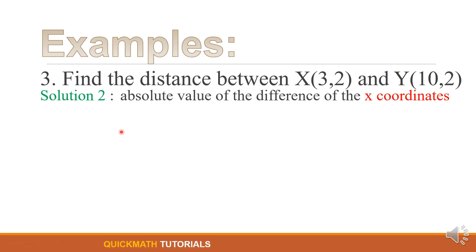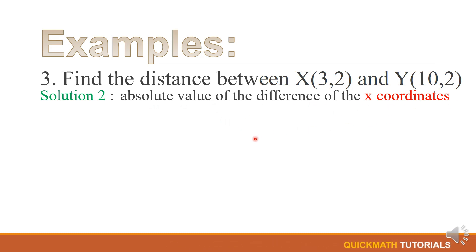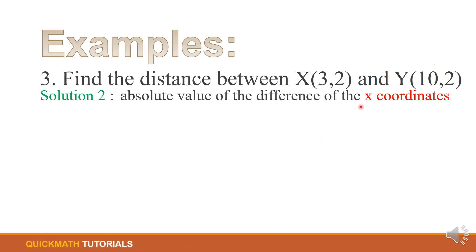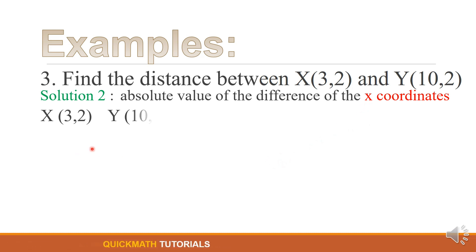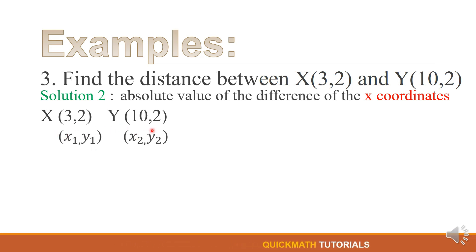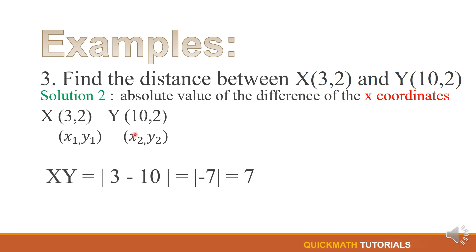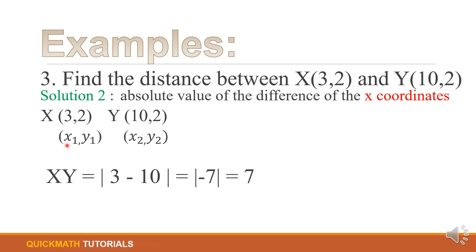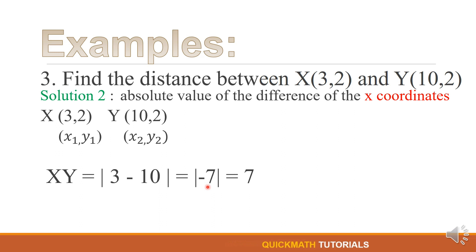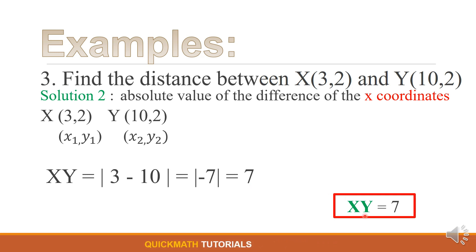For solution number 2, we will have the absolute value of the difference of the x-coordinates. Remember, our line here is horizontal, so we have x-coordinates. But if the line is vertical, just change x to y. In these points, the x-coordinates are 3 and 10. So we get the absolute value of 3 minus 10, which is negative 7, and the absolute value of negative 7 is 7. Therefore, the distance between X and Y is equal to 7 — the same answer as solution number 1.